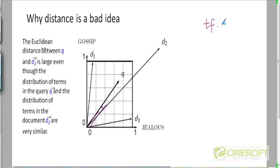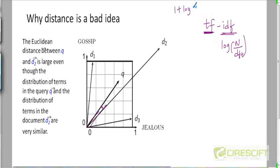For simplicity, in the TF-IDF weight the IDF is log of N divided by df for that particular term. For the term frequency component, instead of working with 1 plus log of the term frequency, let's just work with the term frequency itself. Making this simplification will help us understand a concept that's just coming up.